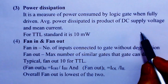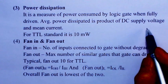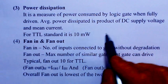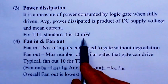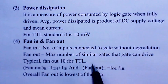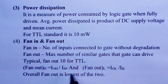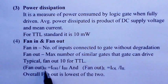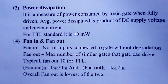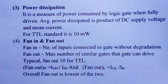Power dissipation is a measure of power consumed by a logic gate. Average power dissipation is DC supply voltage multiplied by the mean current; for standard TTL it is about 10 milliwatts. Fan in is the number of inputs connected to a gate without degradation, and fan out is the maximum number of similar gates it can drive — typically 10 for TTL. Fan out for the high state is IOH/IIH, for the low state is IOL/IIL, and the overall fan out is the minimum of the two.